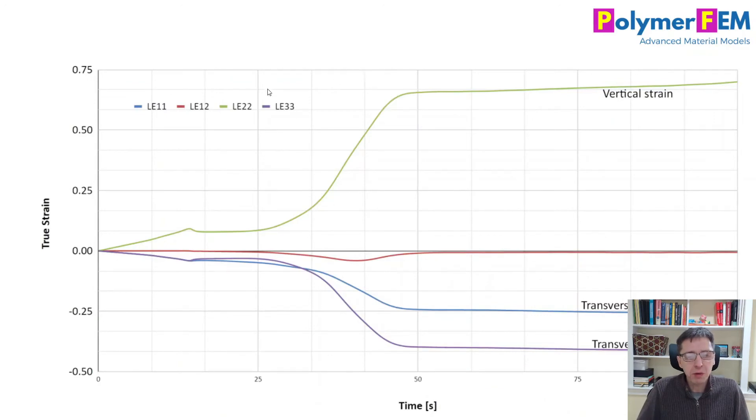If you look at other strain components, you already plotted the dominant axial component, that's LE22 here. That's the vertical strain that I apply. But if you look at the other strain components, we do have a non-zero shear component, but it's not very large. But what's even more interesting is if you look at the two transverse strains, clearly there are two transverse strains, because it's a 3D problem, we see that they're not the same.